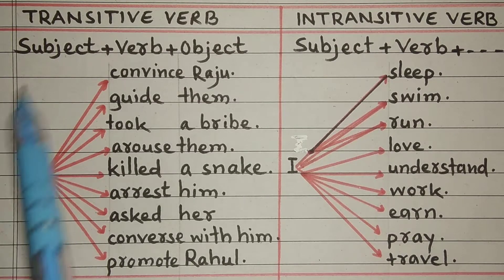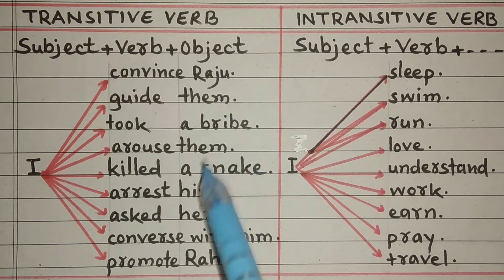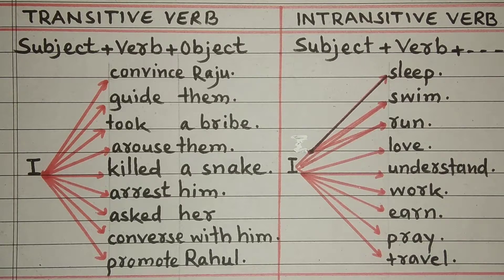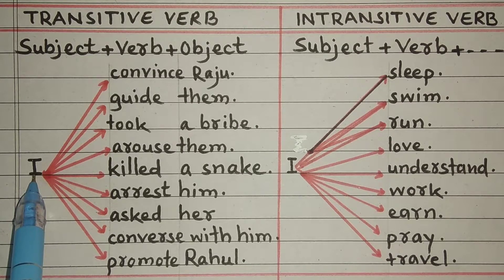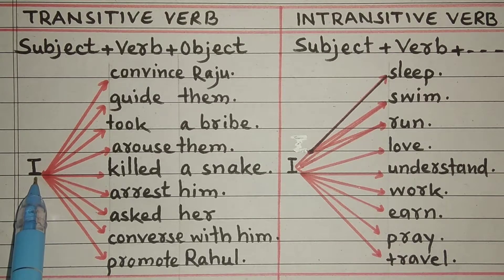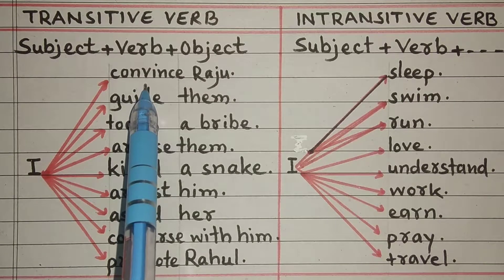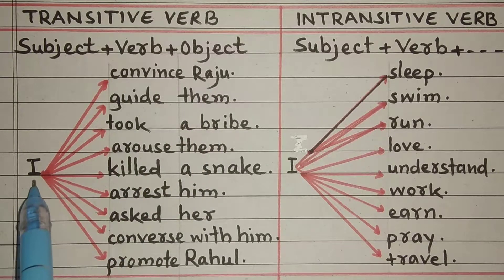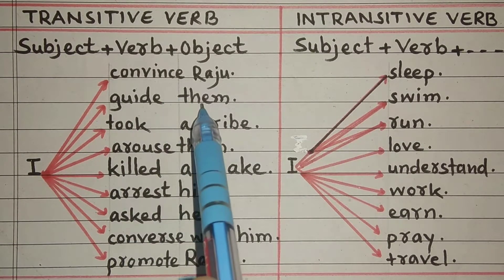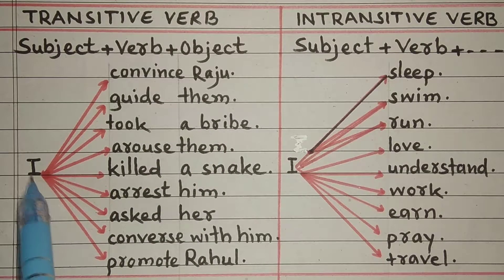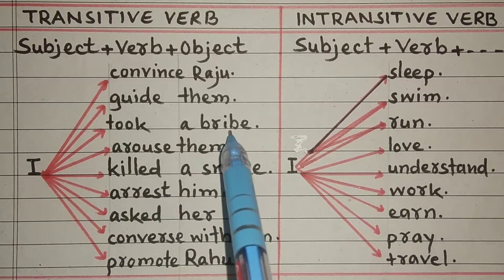Subject I, verb: convince/guide, object: Raju/them. Jumla bolne se pehle hamen sawaal paida hota hai — kon? I. Kya karta hai? Samjhata hai — convince. Kisko samjhata hai? Raju ko. Kon? I. Kya karta hai? Guide karta hai. Kin ko guide karta hai? Them — unko. Next: I, kya kiya usne? Liya — took. Kya liya usne? Brishwad (bribe). Kon? I. Kya karta hai? Arouse — beydaar karta hai, jagata hai. Kin ko? Them — unhe unko jagata hai. Kon? Usne kya kiya? Killed — mara, qatl kiya. Kis ko mara? Ice snake — saanp ko mara.